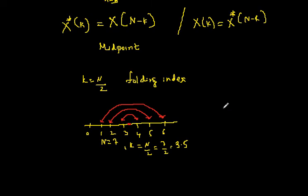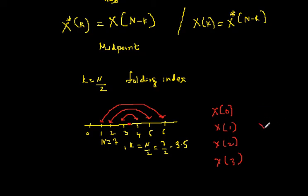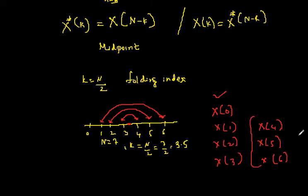For a 7-point DFT, I need to find only X(0), X(1), X(2), and X(3). The remaining points — X(4), X(5), and X(6) — are conjugate symmetric about the midpoint and can be found using the symmetry property. This is the practical significance of the symmetry of real-valued sequences. A numerical example will make this even easier to appreciate. Hope you've understood — if there are any doubts please let me know in the comments section. Thanks for watching.